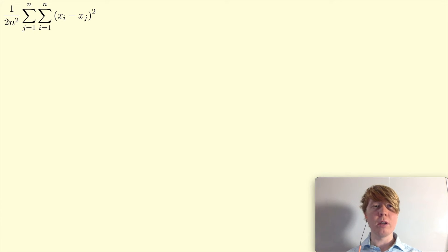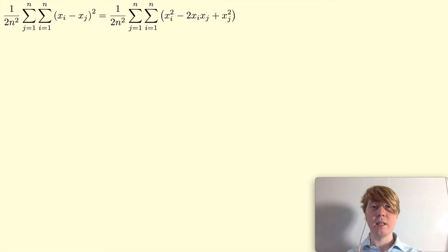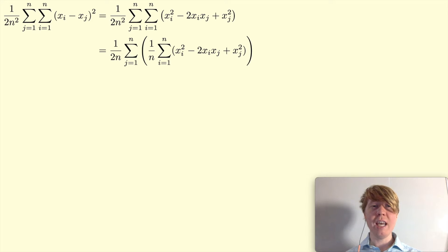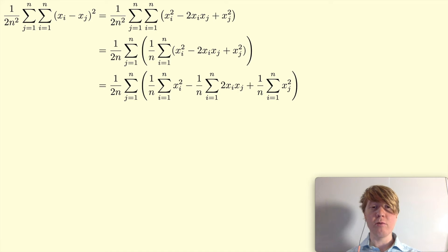The very first thing we do is expand this bracket, and you get xi squared minus 2·xi·xj plus xj squared. Then we're going to consider this inner sum, and I'm going to take a factor of 1 over n inside — this will be really helpful for simplifying our terms — leaving the factor of 1 over 2n outside both sums. Then we split this sum of three terms into three separate sums so we can deal with them one by one.